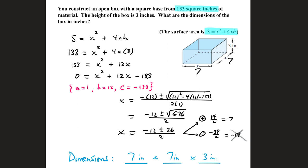We could try to factor it, or use the quadratic formula. A is 1, b is 12, c is negative 133. So we have negative 12 plus or minus the square root of 12 squared minus 4 times 1 times negative 133, all over 2 times 1. That's negative 12 plus or minus the square root of 676, which has a square root of 26, all over 2.